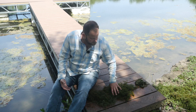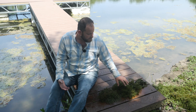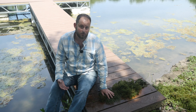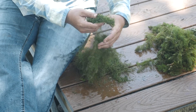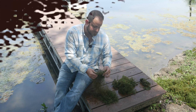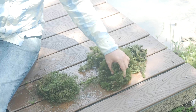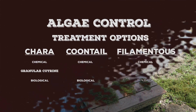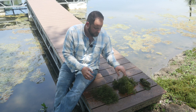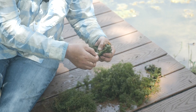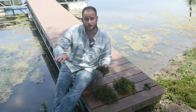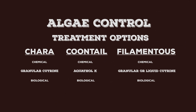Distinguishing between these three different species is important because the chemical and biological control options differ between all three. For skunkweed, or chara, the best option is granular cutrine, because it will actually occur on the substrate the vast majority of the time, growing in shallows. For coontail, aquathol K is probably the most important chemical choice, because it will actually burn this plant. For filamentous algae, you want to use granular cutrine when it's occurring on the benthos or substrate; however, when it comes up to the top, you may want to use a liquid cutrine.